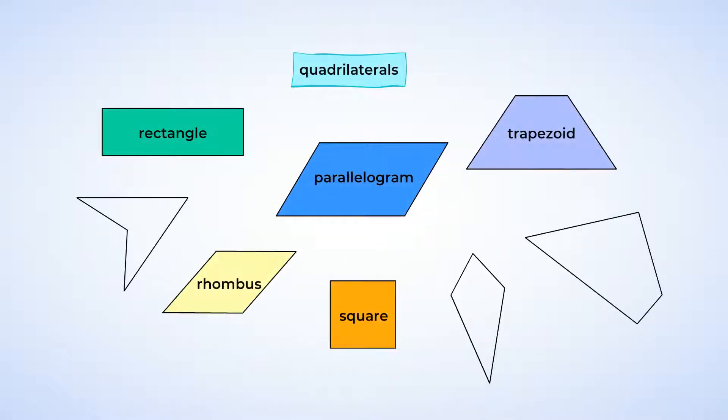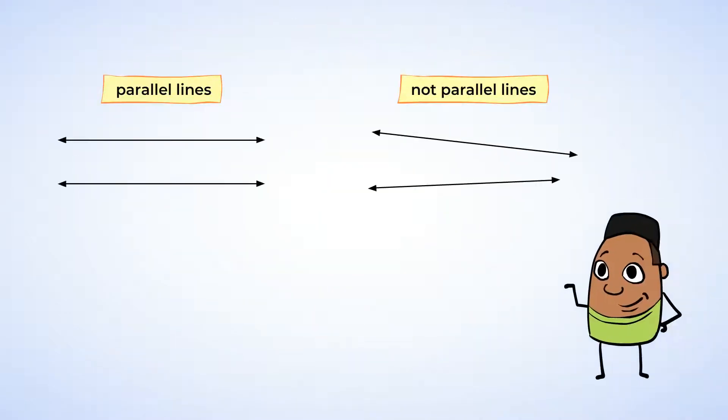Let's start by looking at the sides of the quadrilaterals. The opposite sides of some quadrilaterals are parallel. Parallel means that they're always at the same distance, and even if they extend forever, they will never touch.